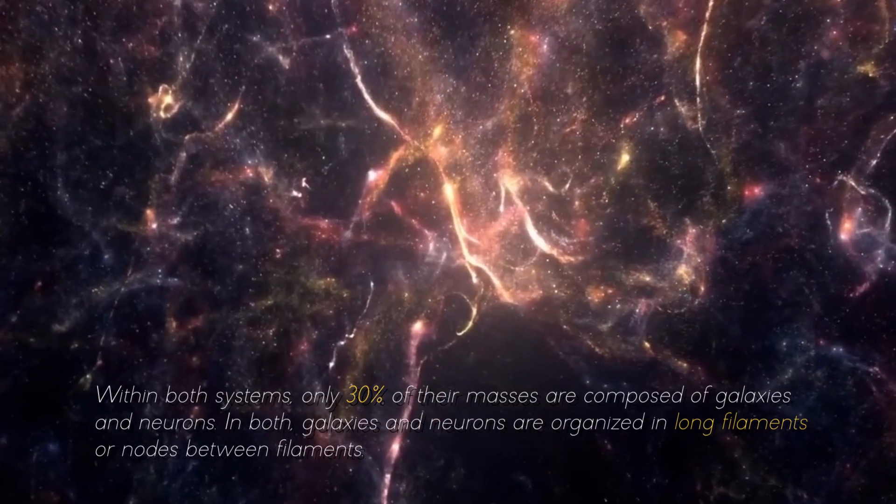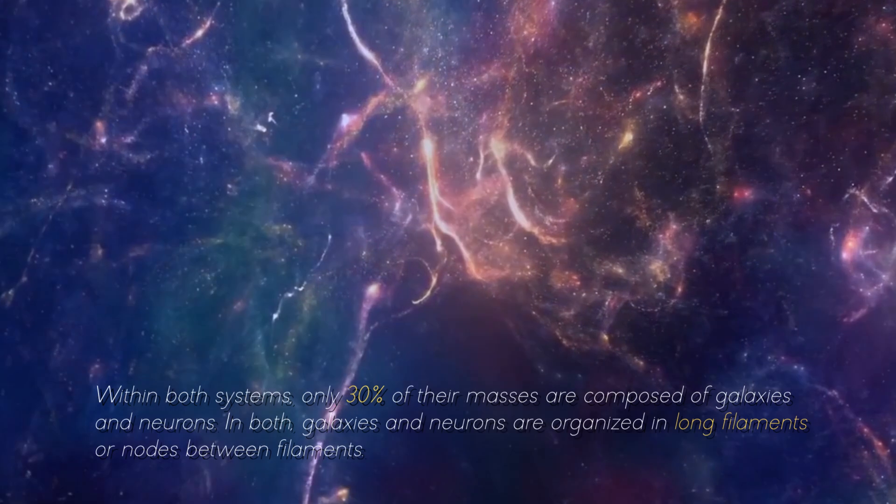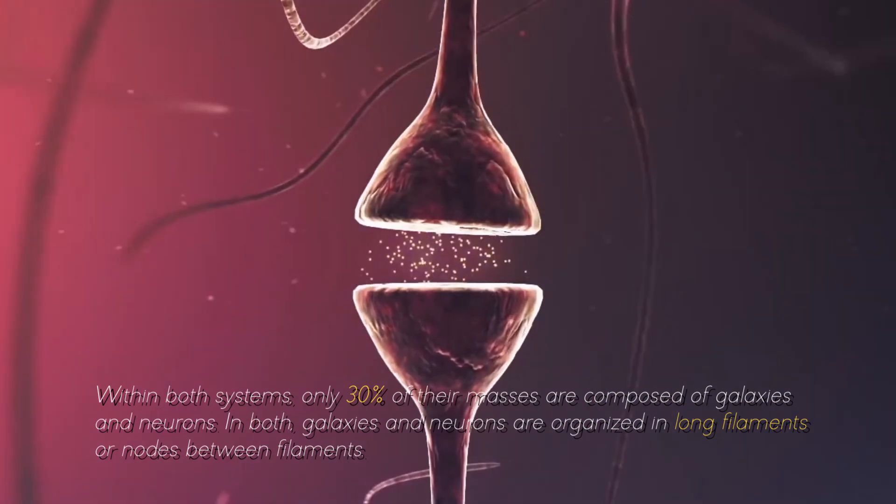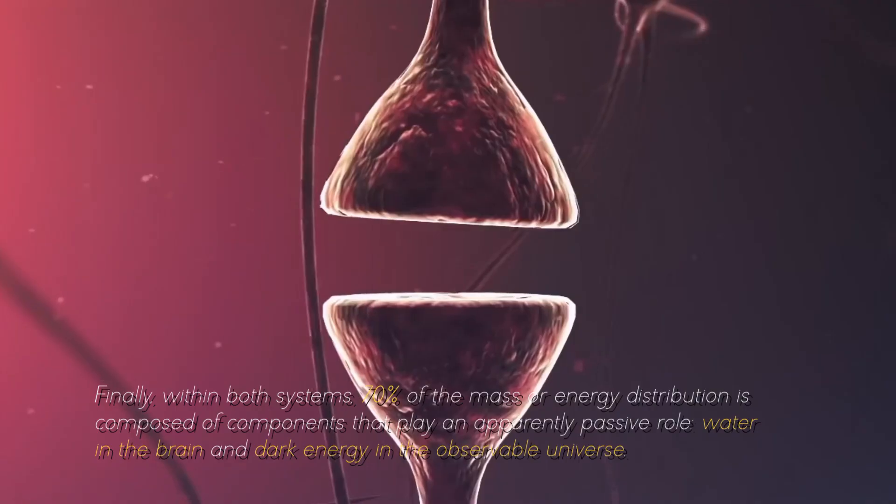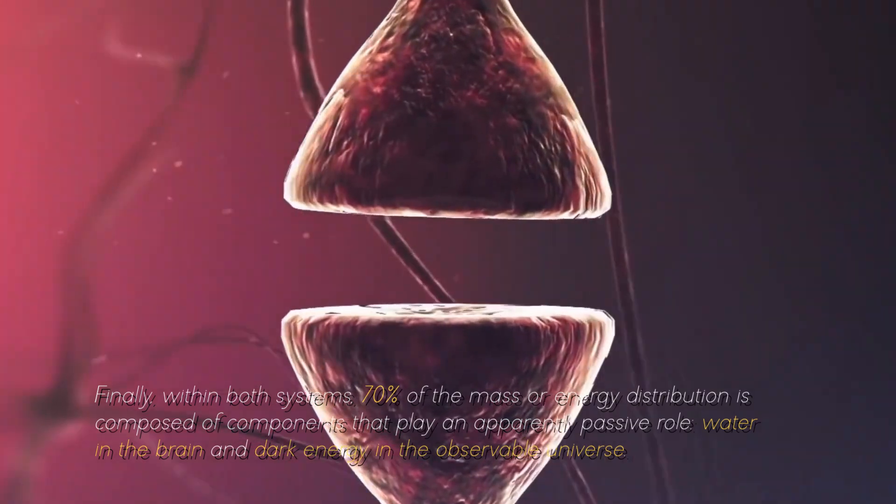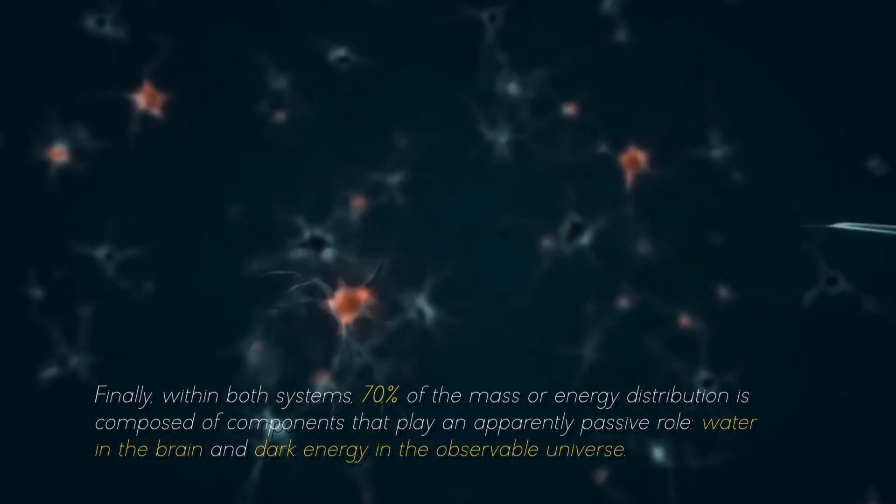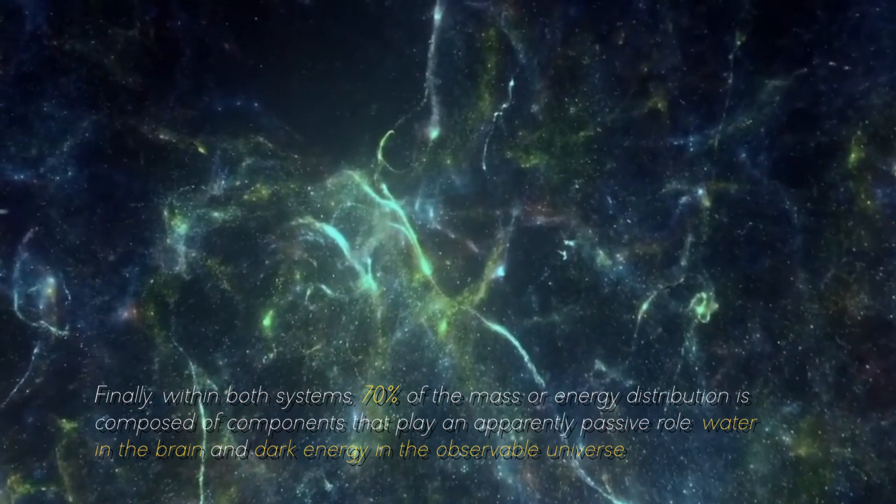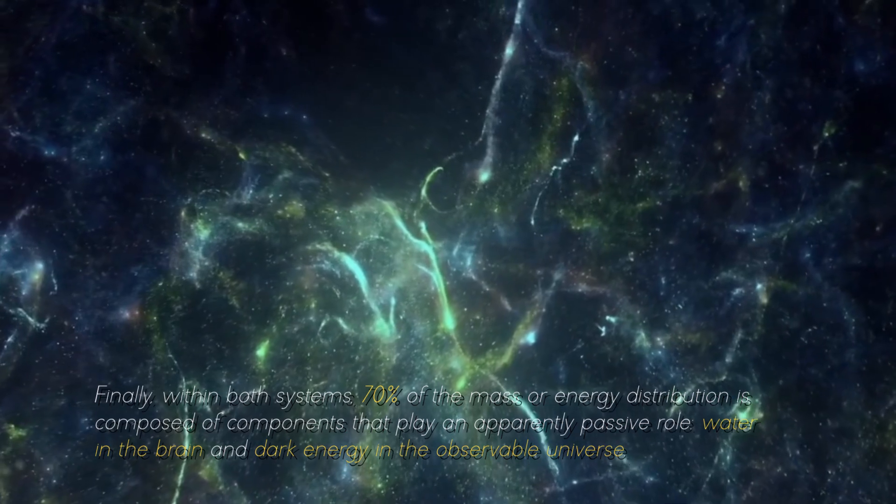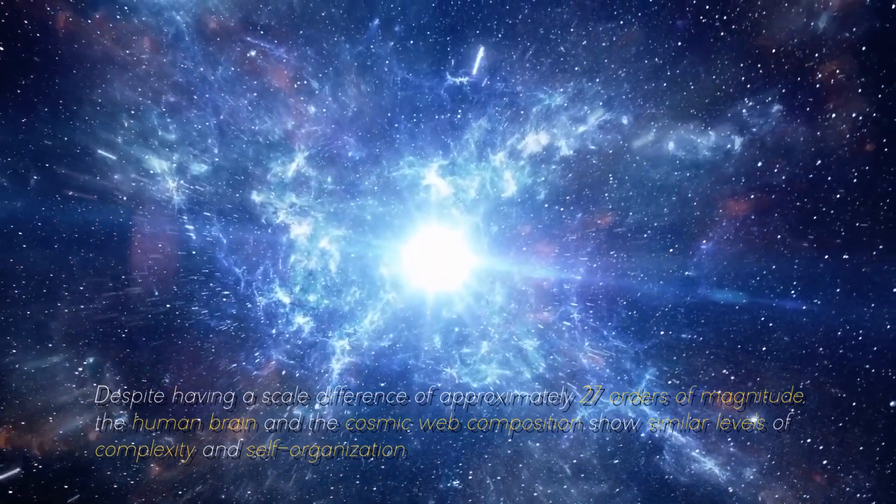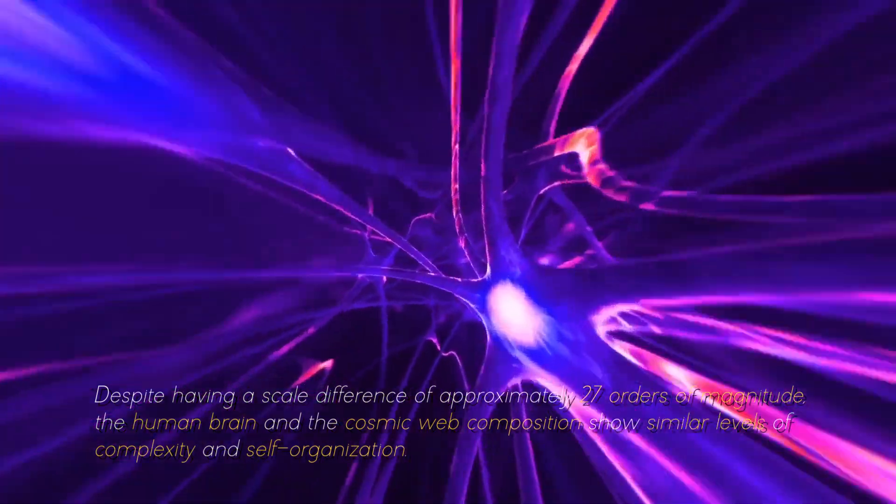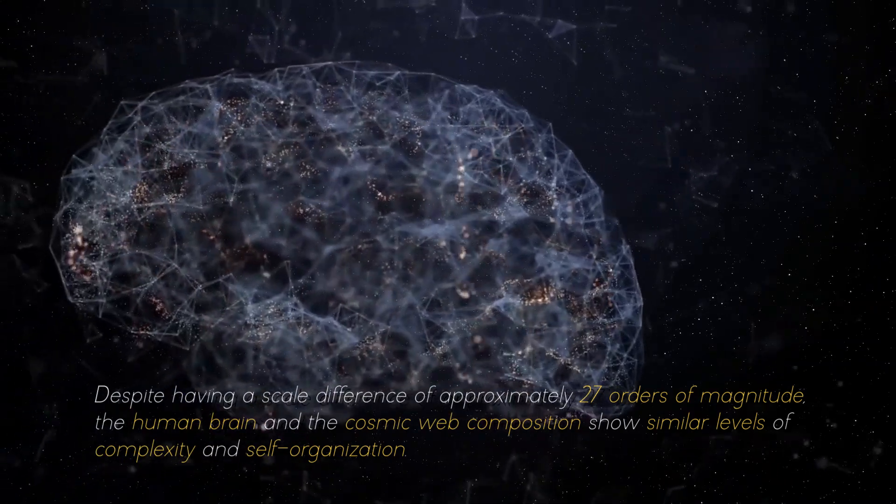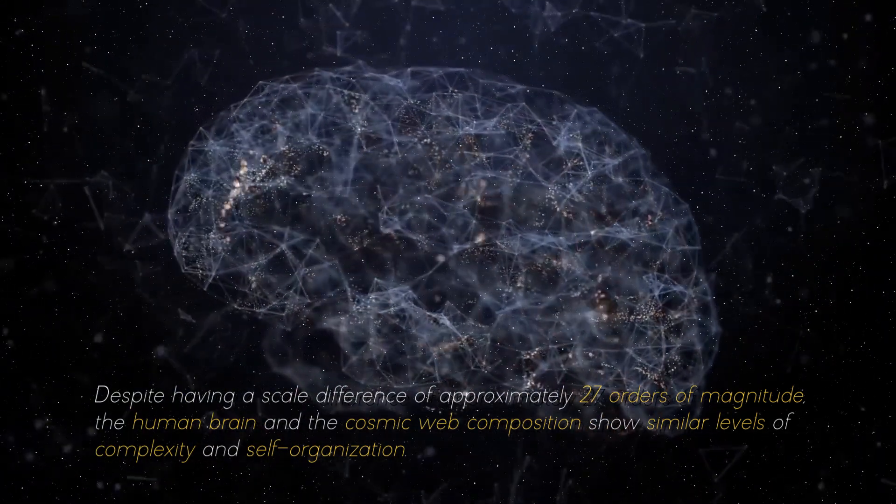Within both systems, only 30% of the masses are composed of galaxies and neurons. In both, galaxies and neurons are organized in long filaments and nodes between filaments. Finally, within both systems, 70% of the mass or energy distribution is composed of components that play an apparently passive role, water in the brain and dark energy in the observable universe. Despite having a scale difference of approximately 7 orders of magnitude, the brain and the cosmic web composition show similar levels of complexity and self-organization.